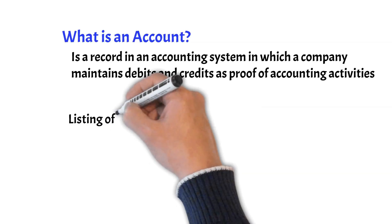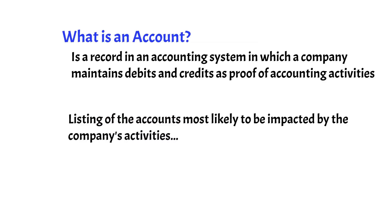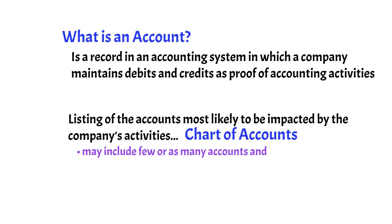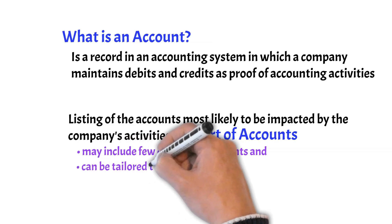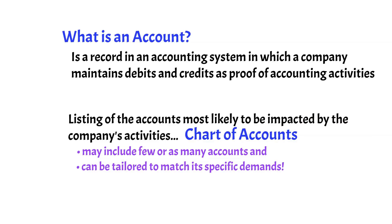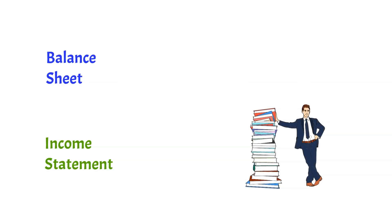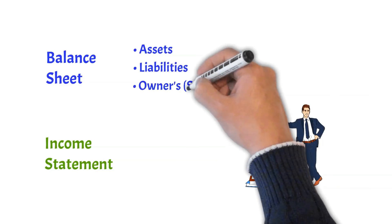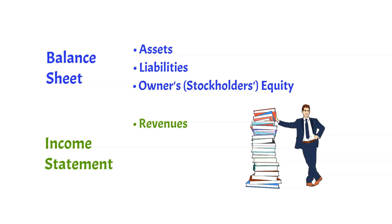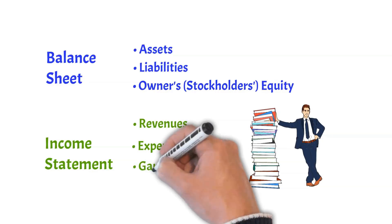When a company's accounting system is put in place, the accounts that are most likely to be impacted by the company's activities are identified and listed. This is known as the company's chart of accounts. The chart of accounts may include few or as many accounts, depending on the size of the company and the complexity of its business operations, and it can be tailored to match its specific demands. When a suitable account cannot be identified, accounts may be added to the chart of accounts. The balance sheet accounts are listed first in the chart of accounts, followed by the income statement accounts. The accounts are structured in the chart of accounts as follows: Assets, Liabilities, Owners/Stockholders Equity, Revenues, Expenses, Gains, and Losses.